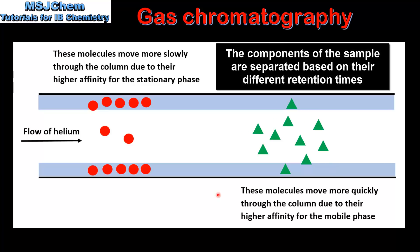The time taken for each component to pass through the column is known as the retention time. The molecules on the left with a greater affinity for the stationary phase will have a longer retention time, and the molecules on the right with a greater affinity for the mobile phase will have a shorter retention time.